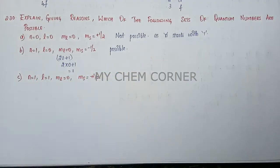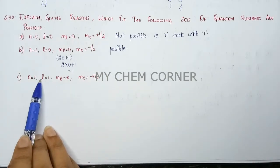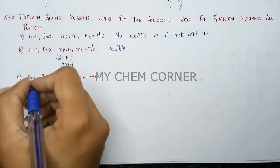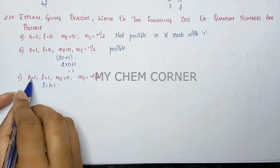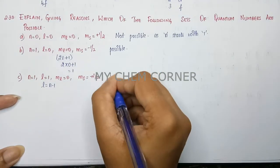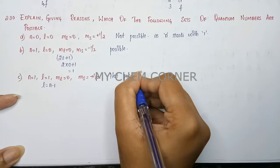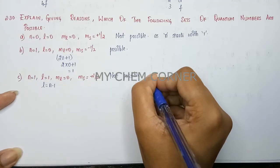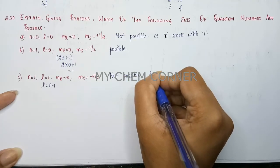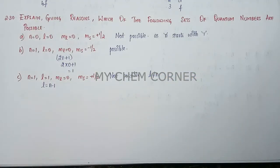In the third question, n is equal to one and l is also equal to one. We know this is not possible because the formula for l is n minus one, meaning l must be one number less than n. So l cannot equal n. In this case, this set is not possible.